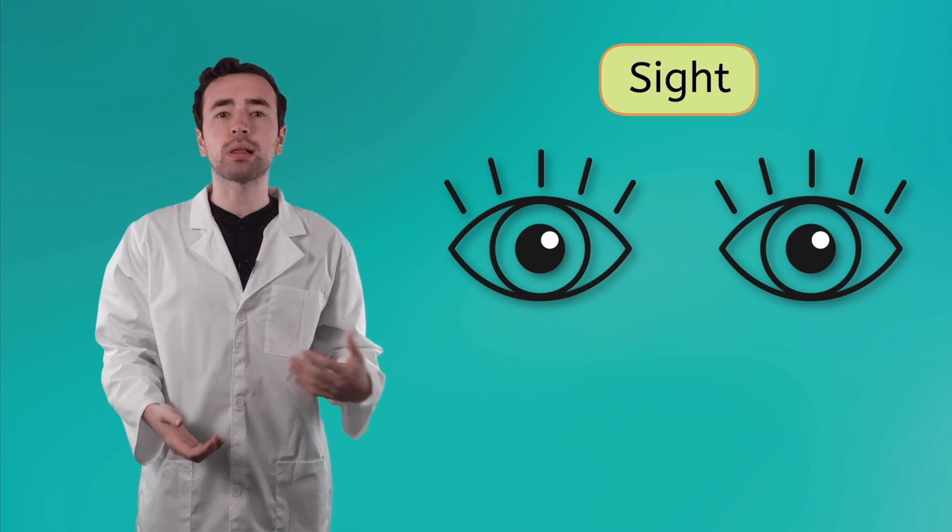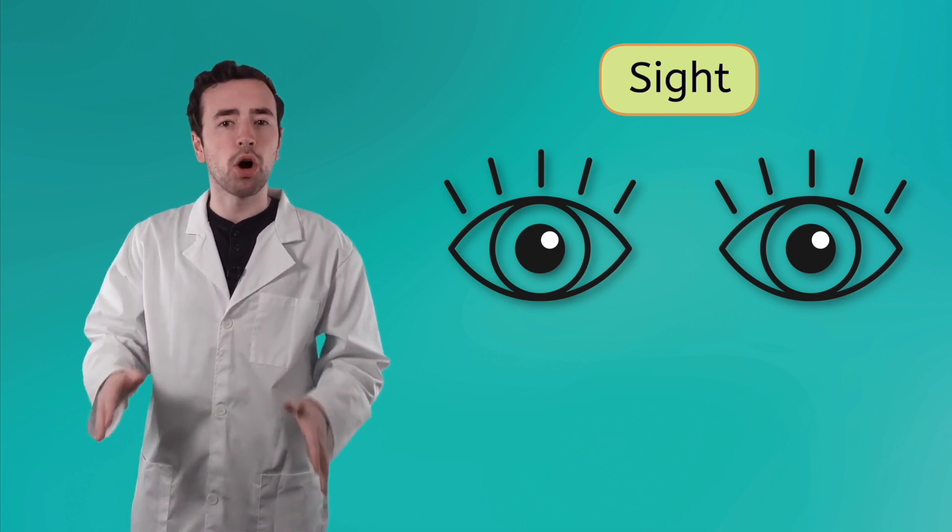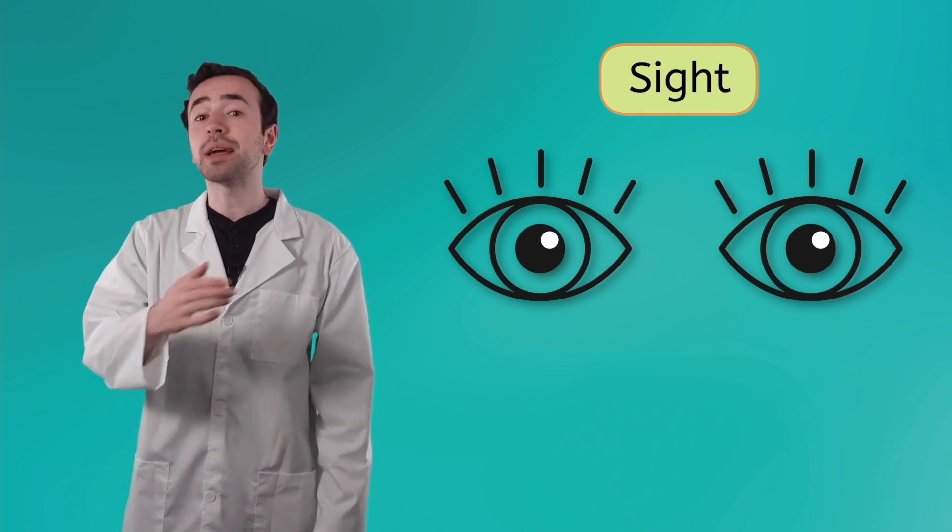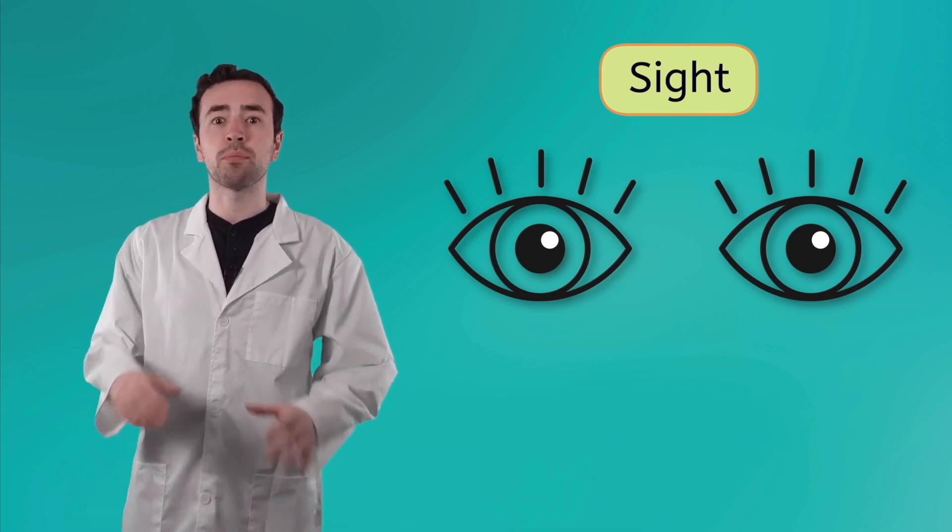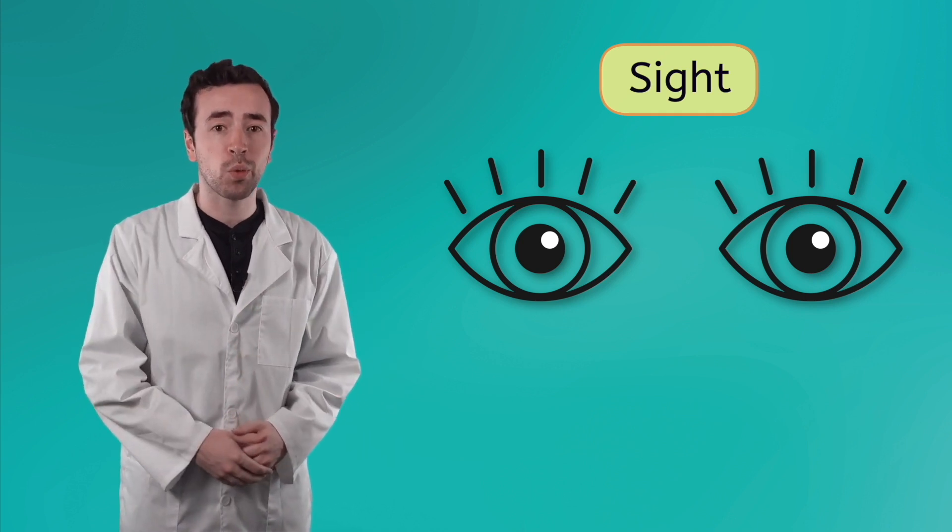Eyes are the part of the body that makes it possible to see. Some people wear glasses or contact lenses to help them see things better. If someone can't see at all or has trouble seeing, they might use special tools like books with bumpy letters called braille, or a white cane to help them move safely around the world.